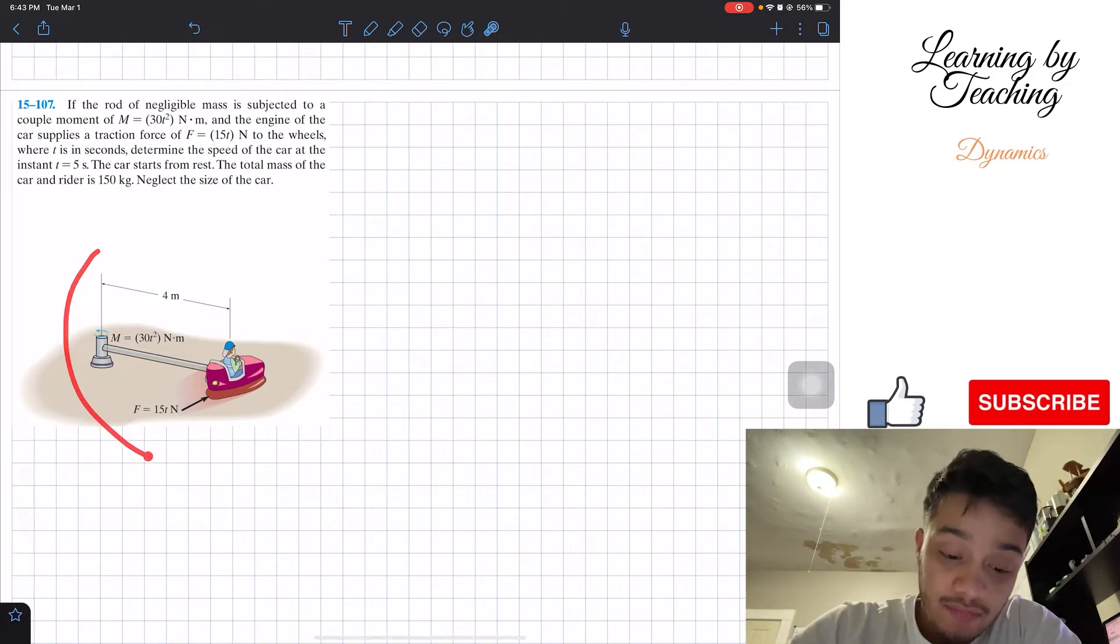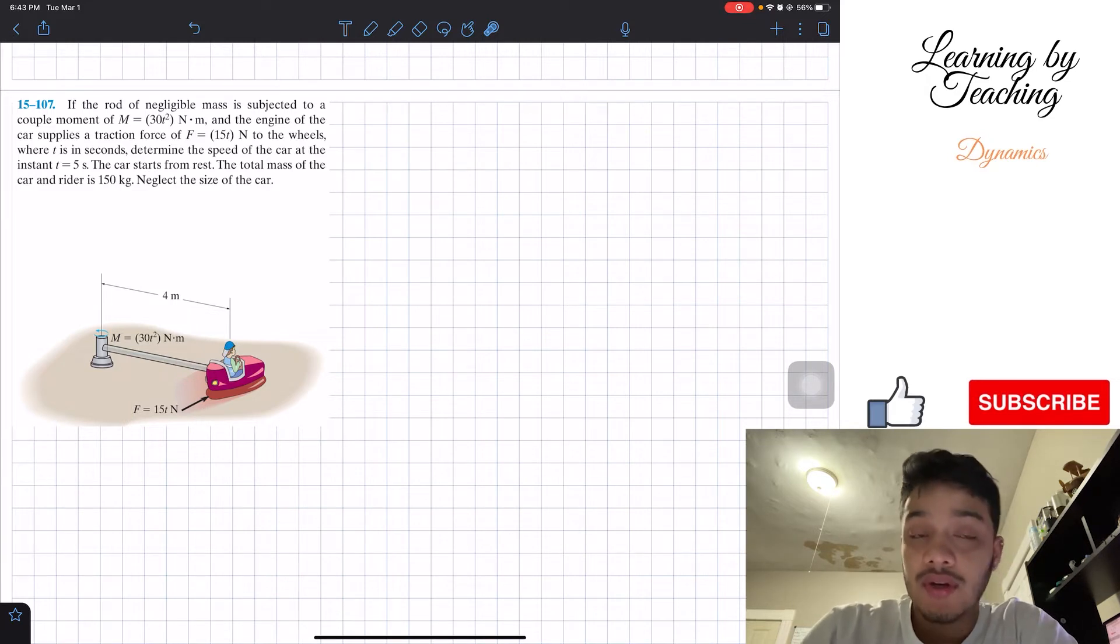So what we see here is that we have this little car going around with this moment that is 30t² newton-meters. We have a total distance of 4 meters and we also have a traction force of 15t newtons. The question we're asked is, what is the velocity after 5 seconds of this moment and this force being applied to the car?